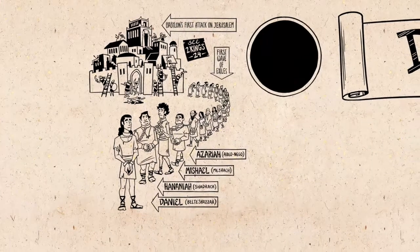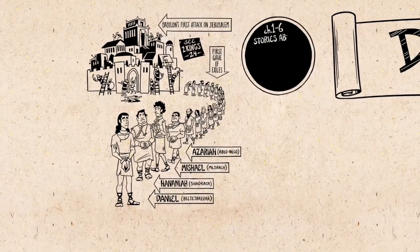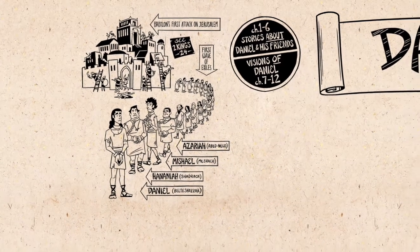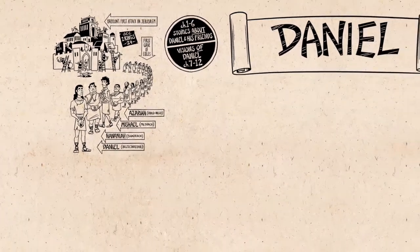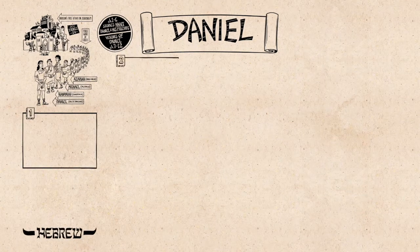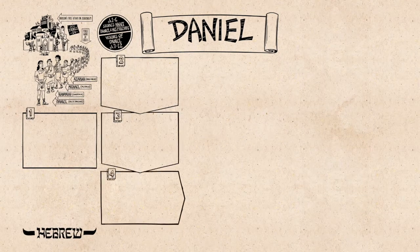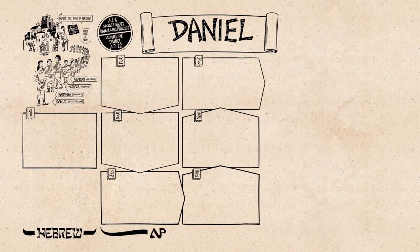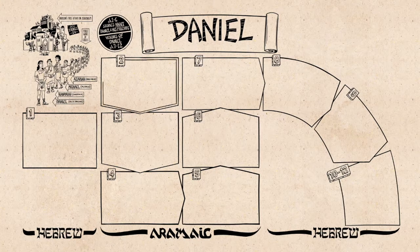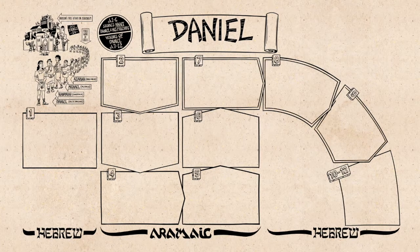The book's design seems pretty simple at first. Chapters 1–6 contain stories about Daniel and his friends in Babylon, while chapters 7–12 contain the visions of Daniel about the future. But this two-part shape is made even more interesting by another design feature: the book's language. It begins in Hebrew, the language of the Israelites, but chapters 2–7 are written in Aramaic, a cousin language to Hebrew spoken widely among the ancient empires. Then in chapters 8–12, it goes back to Hebrew. This design shows how chapters 2–7 are a coherent section, and highlights the importance of chapters 2 and 7 for understanding the later chapters of the book.